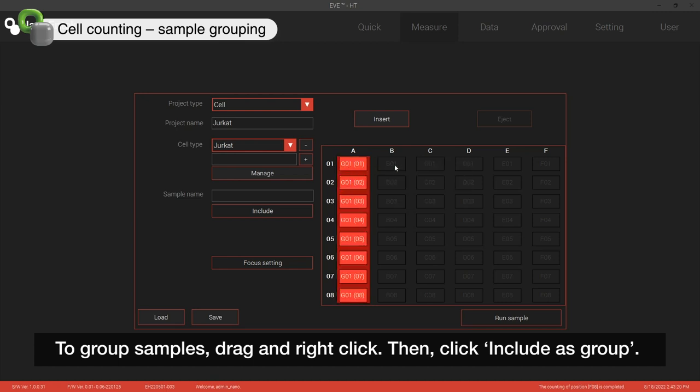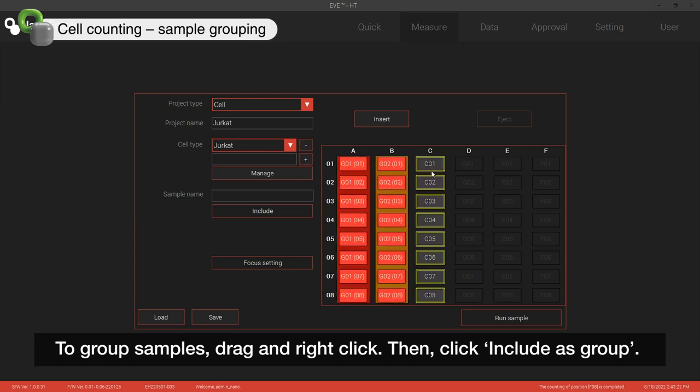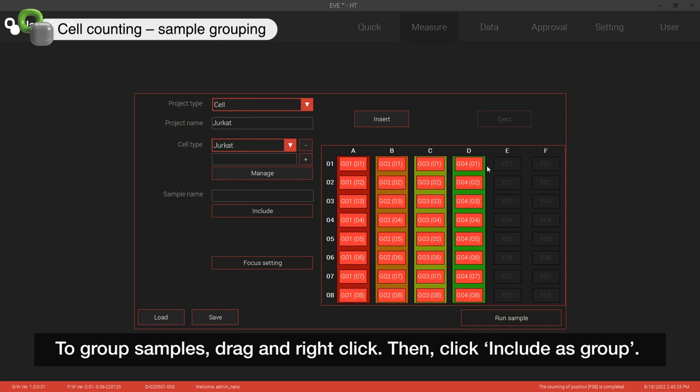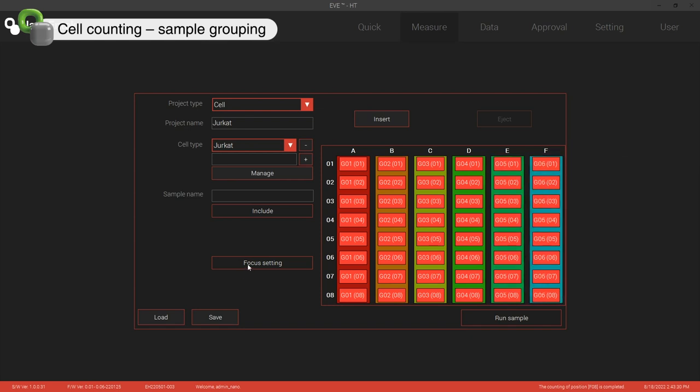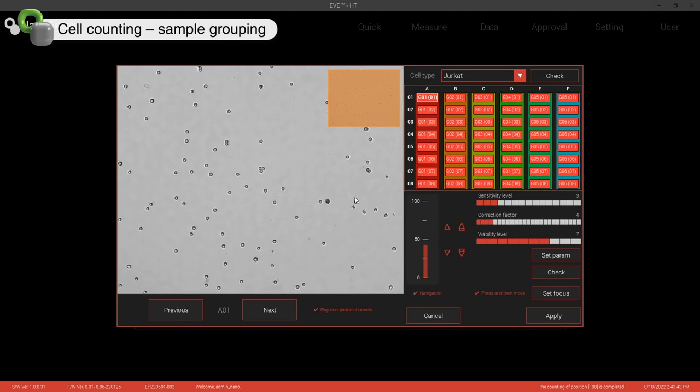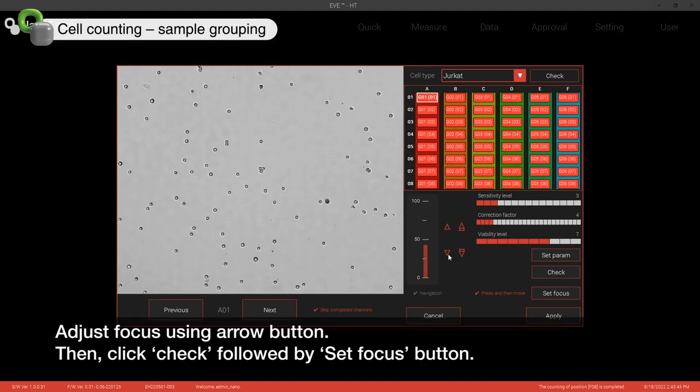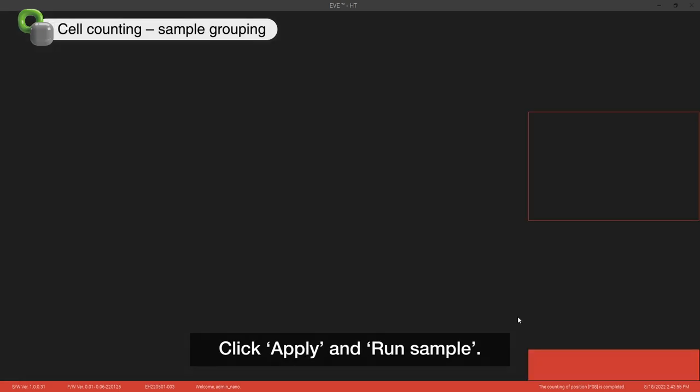To group samples, drag and right click. Then click Include as Group. Adjust focus using arrow button. Then click Check followed by Set Focus button. Click Apply and Run Sample button.